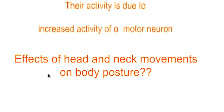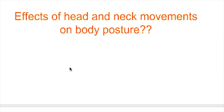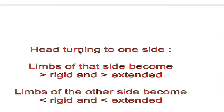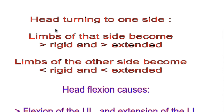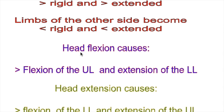Regarding the effects of head and neck movements on body posturing: if the head is turned to one side, the limb of that side becomes more rigid and more extended, while the limbs of the other side become less rigid and less extended. Head flexion causes more flexion of the lower limb and extension of the upper limb.